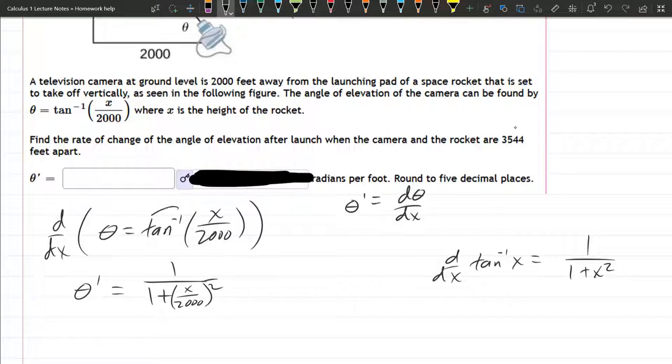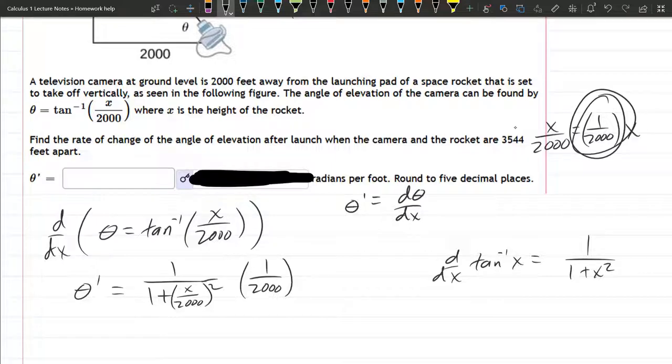Chain rule now, we just took care of the tangent inverse. So we take the derivative of x over 2,000. Derivative of x is 1, so it's 1 over 2,000. If that's tricky to see, normally I would write x over 2,000 as 1 over 2,000 times x. And when it's written like this, and you take a derivative, you can see this is the constant. And derivative of x is 1, and that's why the derivative would be 1 over 2,000. And that's why the x disappears.